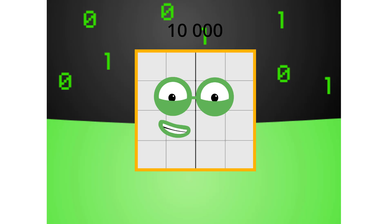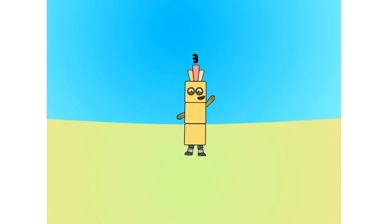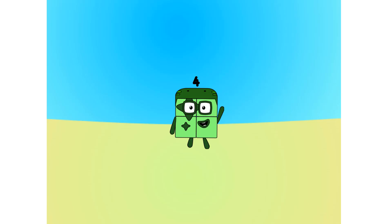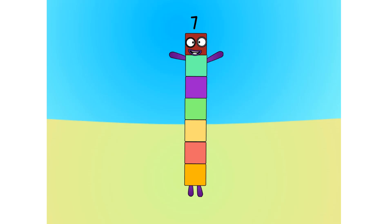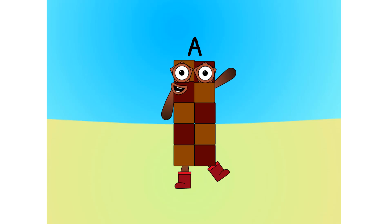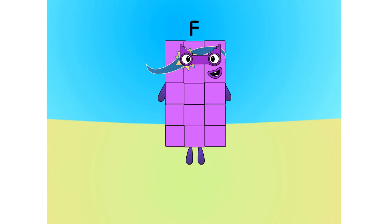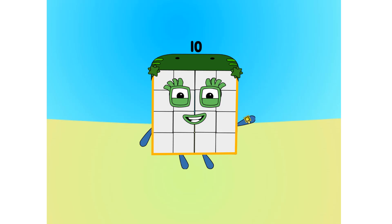Let's move on to the next base. This is base 16, also known as hexadecimal, or hex. If this is base 16, there needs to be 16 digits: 1, 2, 3, 4, 5, 6, 7, 8, 9, A, B, C, D, E, F, 1-0.